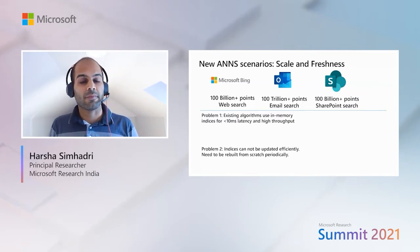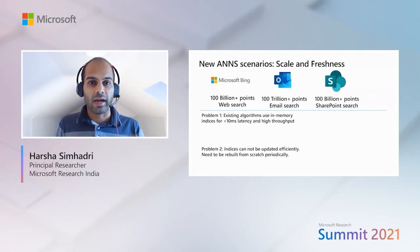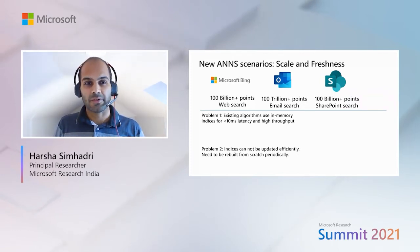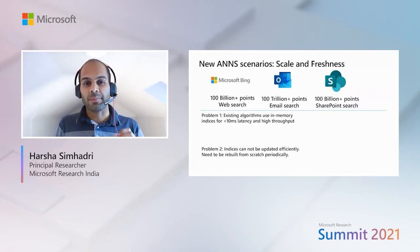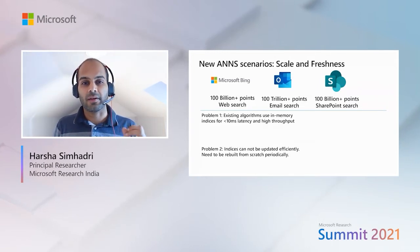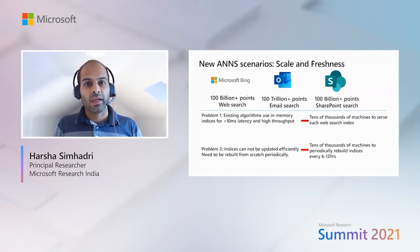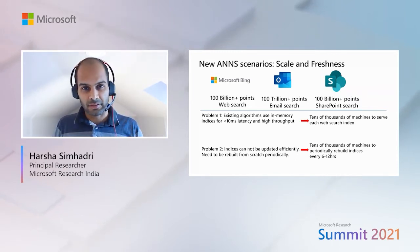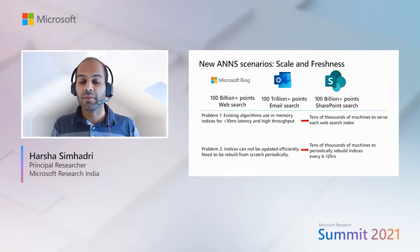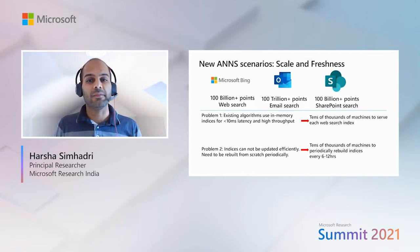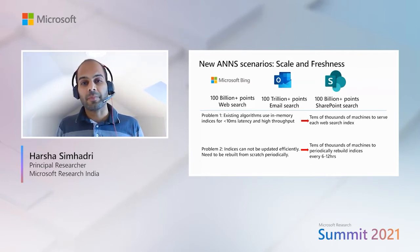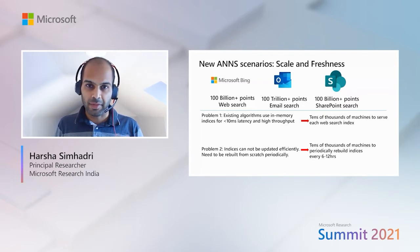At this scale, current algorithms have many limitations, two of which we think are key and are addressed in our research. The first problem is that existing state-of-the-art graph algorithms use in-memory data structures to provide interactive latencies and high throughput. The second problem is that these indices cannot be updated efficiently — if you do a large sequence of deletes on most graph indices, their recall properties degrade and they become ineffective. As a result, in practice they'll be rebuilt from scratch periodically. If you were to try and support a trillion-point index using current algorithms, we would need tens of thousands of machines to serve the index and also tens of thousands of machines to periodically rebuild this index every 6 to 12 hours. This is not practical at scale and this prevents the wide deployment of NNS indices.